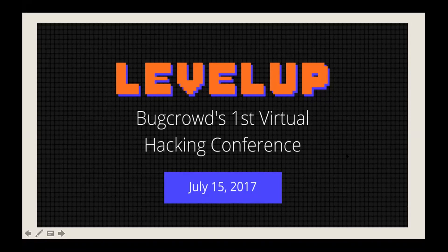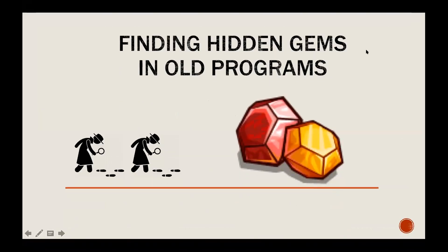My topic is about finding hidden gems in old programs. I chose this topic because I found that BugCrowd was creating a conference and I thought this was my chance to present and share something with other researchers, especially newer researchers — how to find bugs or at least P3 or P4 findings in old programs.